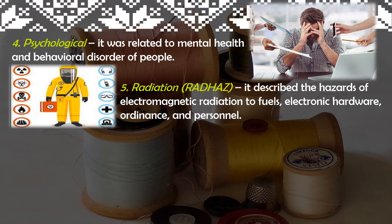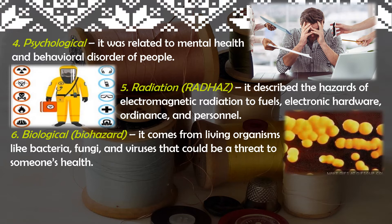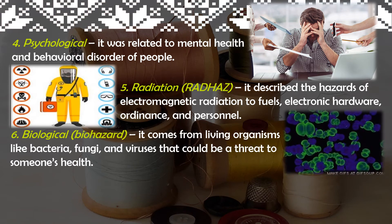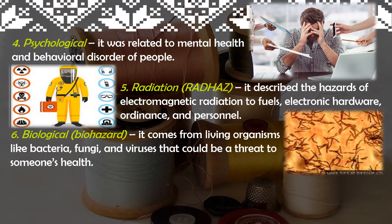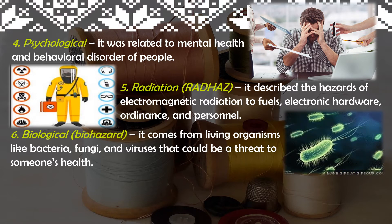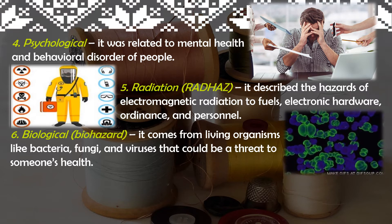Another one is radiation hazard. Radiation hazard describes the hazards of electromagnetic radiation to fuels, electronic hardware, and personnel. Number six is biological hazard or biohazard — it comes from living organisms like bacteria, fungi, and viruses that could be a threat to someone's health. Just like what we are experiencing now, we encounter the coronavirus — that is an example of biological hazard, as with COVID-19.